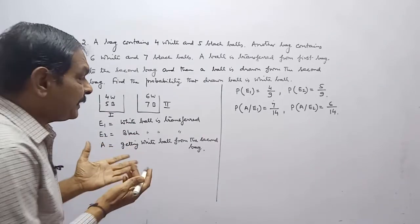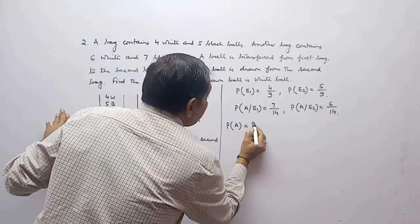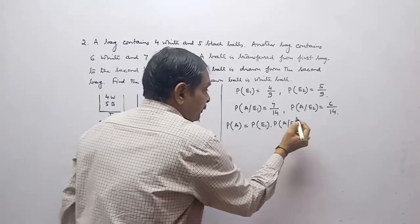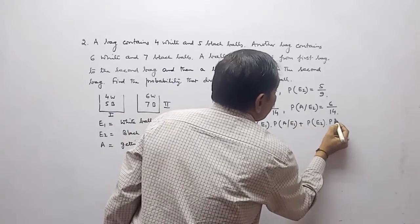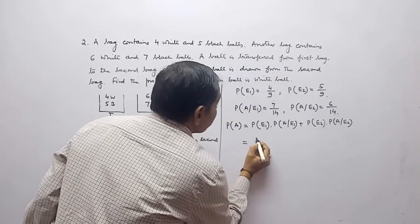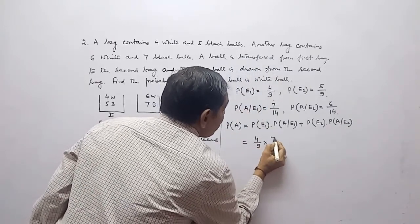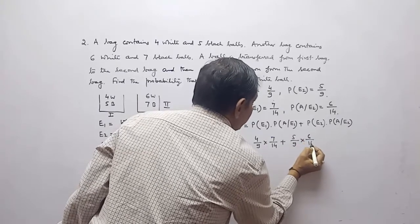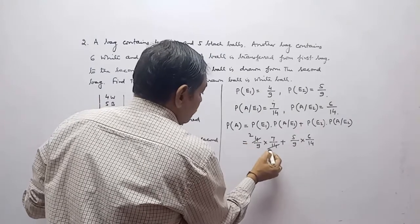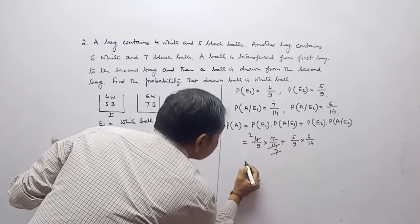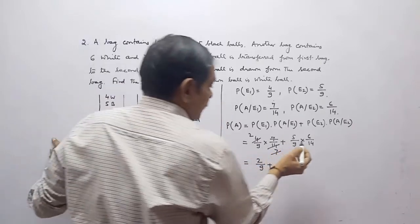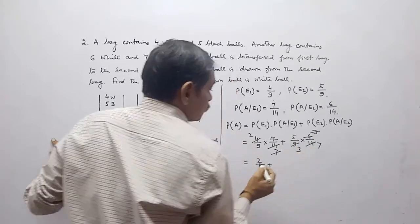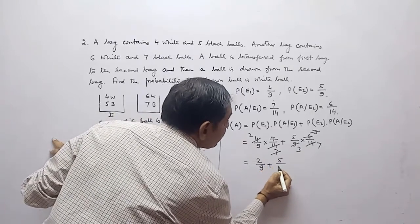Using the total probability theorem: P(A) equals P(E1) times P(A|E1) plus P(E2) times P(A|E2). This gives us four by nine into seven upon 14 plus five by nine into six upon 14. Simplifying, this becomes two upon nine plus five upon 21.